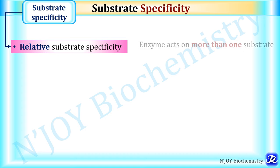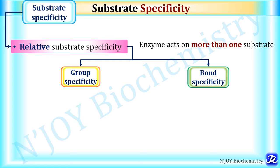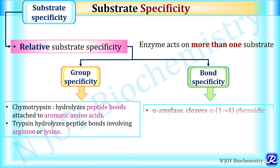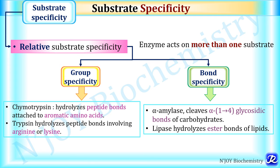Relative substrate specificity means the enzyme acts on more than one substrate. It can be group specificity, where a particular enzyme acts on substrates belonging to one particular group, or bond specificity, where substrates are linked by the same particular bond. For example, in group specificity, chymotrypsin hydrolyzes peptide bonds of aromatic amino acids — phenylalanine, tyrosine, tryptophan — and trypsin hydrolyzes peptide bonds involving basic amino acids like arginine and lysine. In bond specificity, alpha-amylase cleaves alpha-1,4 glycosidic bonds of carbohydrates, and lipases hydrolyze the ester bonds of lipids.